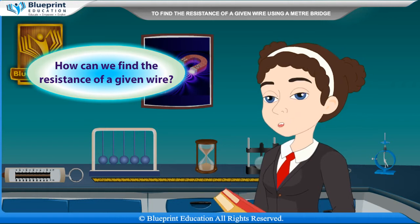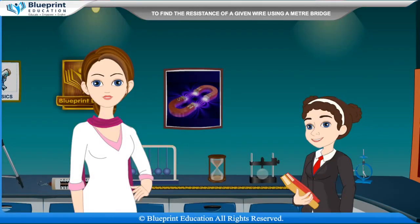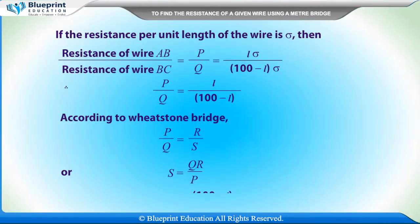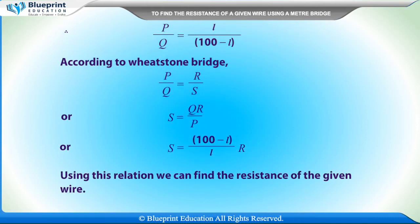How can we find the resistance of a given wire? We can find the resistance as follows. If the resistance per unit length of the wire is sigma, then the resistance of wire AB divided by resistance of wire BC equals P/Q = Lσ / (100−L)σ, giving P/Q = L/(100−L). According to the Wheatstone bridge, P/Q = R/S, so S = (100−L)/L × R. Using this relation, we can find the resistance of the given wire.